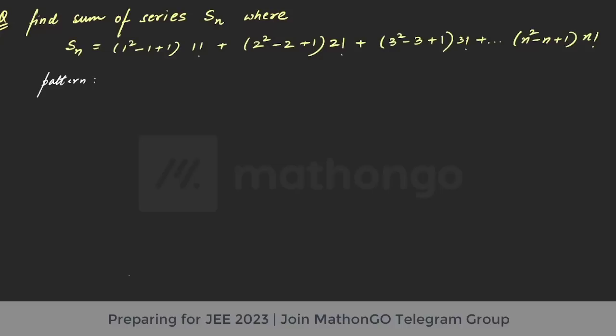If I look at the rth term, the rth term was r square minus r plus 1 times r factorial. Sir, what is the pattern that you are talking about here? The pattern is that we have to express this term as